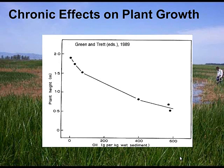Regarding chronic effects on plant growth: this classic graph characterizes oil in sediment measured in grams per kilogram of wet weight sediment, from a UK study. On the y-axis is plant height as the health metric. As you increase the concentration of oil in the sediment, plant height decreases. These plants are rooted into contaminated sediment with a chronic long-term exposure, resulting in decreased growth. This is an example of chronic effects.